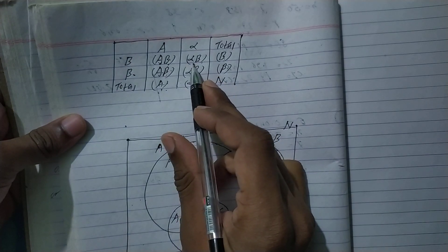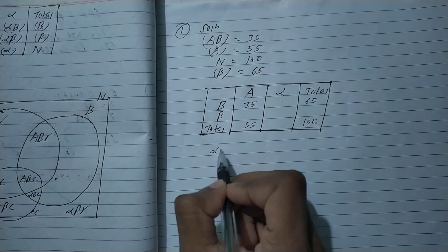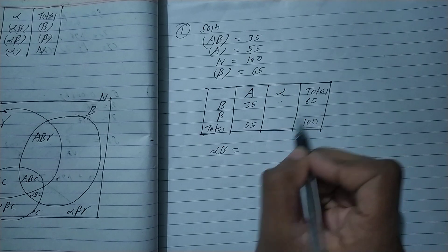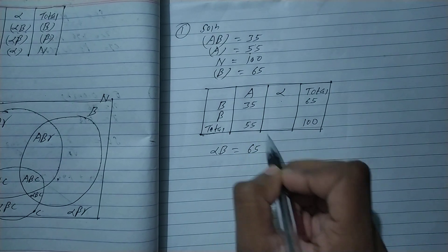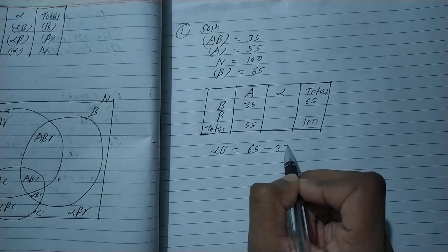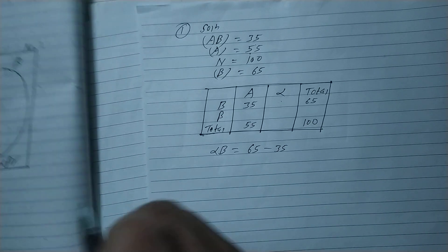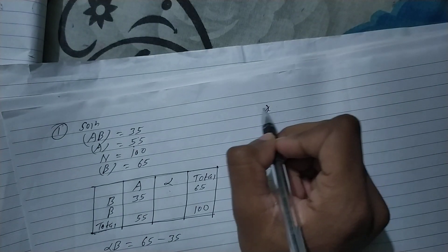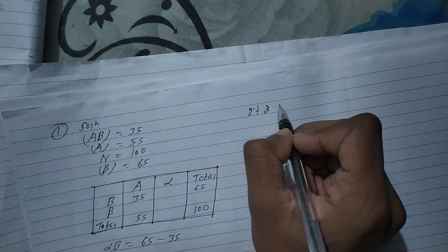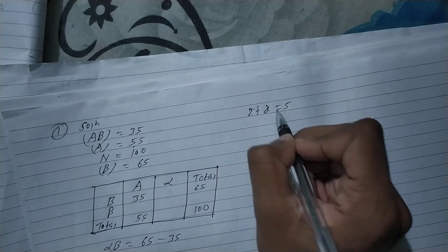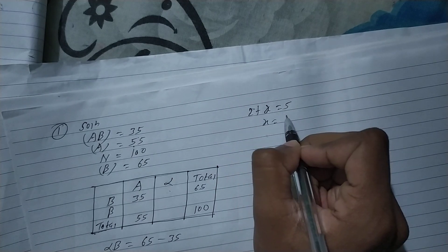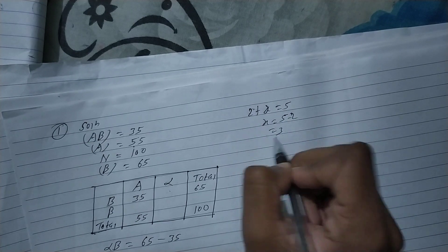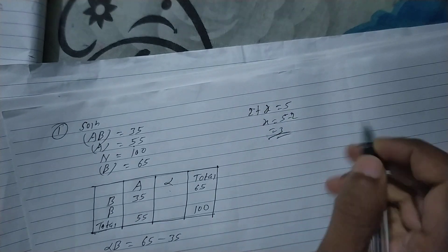Alpha B — what is this? Alpha B is 65 minus 35, which equals 30. So 2 plus X equals 5, meaning X is 3. Same here for Y — how is this? This is 3.